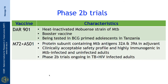Under Phase 2b we have 2 vaccines. DAR-901 is a heat-inactivated Mycobacterium obuense strain; it is a booster vaccine being tested in BCG-primed adolescents in Tanzania. The M72/AS01 vaccine is a protein subunit containing MTB antigens 32A and 39A in an adjuvant; it has a clinically accepted safety profile and is highly immunogenic in MTB-infected adults, with Phase 2b trials ongoing in HIV-TB infected adults.